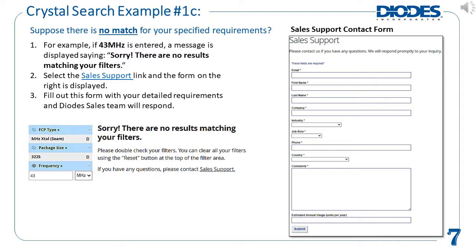In case no match is found — for example, if 43 MHz is entered — a message is displayed saying, 'Sorry, there are no results matching your filters.' In this case, a link is provided to Contact Sales Support, which is displayed on the right side of this page. Fill out this form along with your detailed FCP requirements and Diodes Sales will provide assistance.